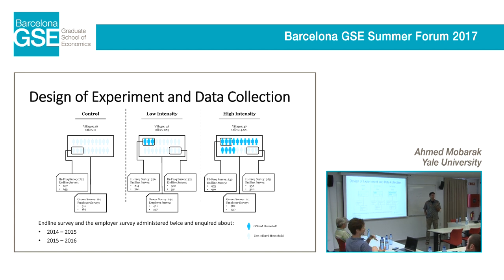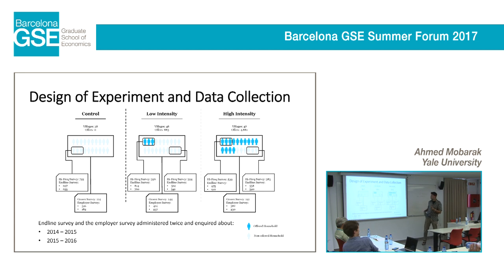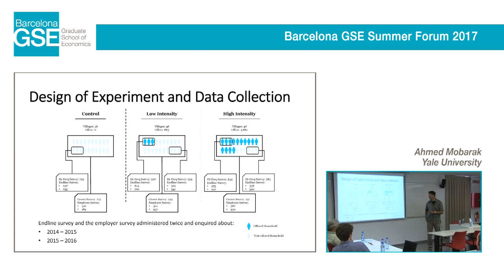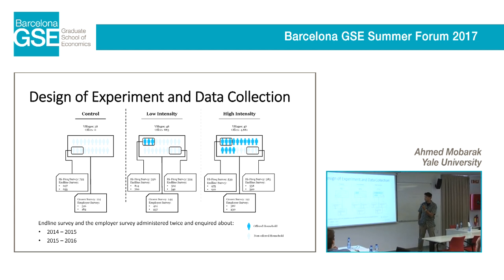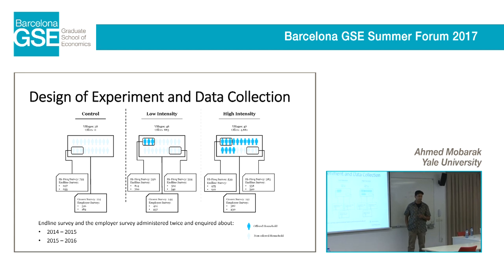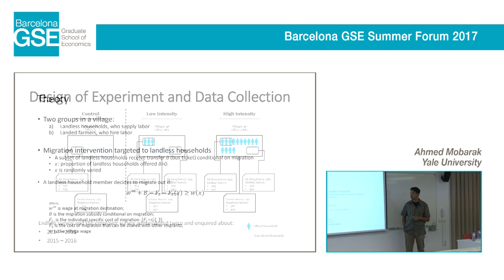Why two treatment intensities instead of three or four different levels? The problem is that the random variation here is at the village level, so we run out of statistical power pretty quickly because it's clustered randomization, which is costly.